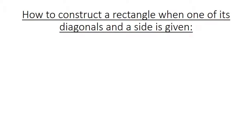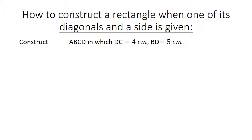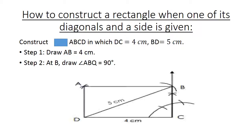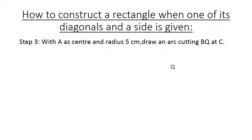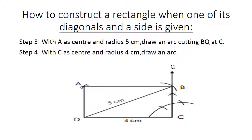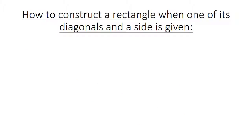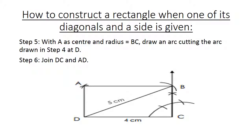How to construct a rectangle with one of its diagonals and a side given. Construct rectangle ABCD in which DC equals four centimeters and BD equals five centimeters. Step one: draw AB equals four point five centimeters. Step two: at B, draw angle ABQ equals ninety degrees. Step three: with A as center and radius five centimeters, draw an arc cutting BQ at C. Step four: with C as center and radius four centimeters, draw an arc. Step five: with A as center and radius equal to BC, draw an arc cutting the arc from step four at D. Step six: join DC and DA.